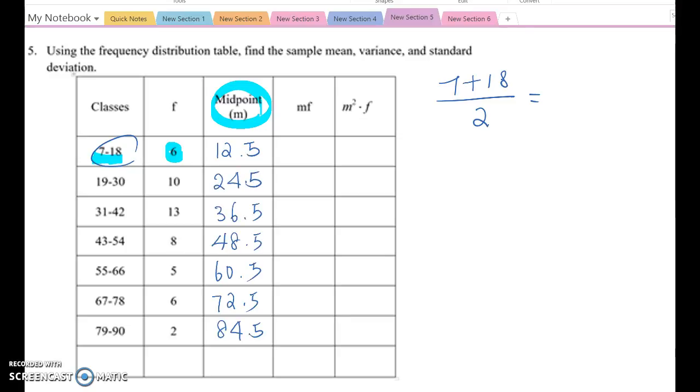If you calculate all the midpoint values, you will get 24.5, 36.5, 48.5, 60.5, 72.5, and 84.5. Those values represent each class data value.